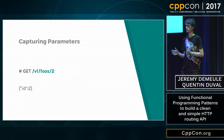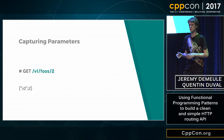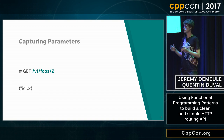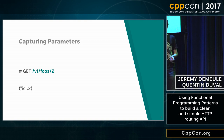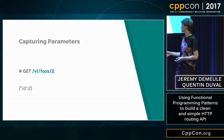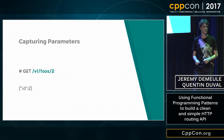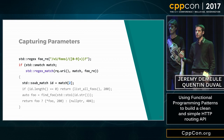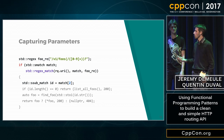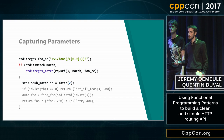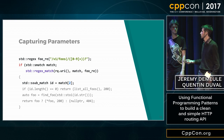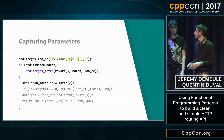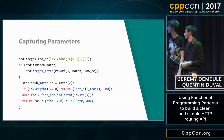Instead of sending static URIs — meaning a URI that doesn't contain a variable — we are going to send a URI which contains something that we must extract. For instance, we're going to send the GET request to the URI /v1/foos/2, where 2 stands for the identifier of the foo that we would like to retrieve. This time, we can't use exact match anymore. We have to express all the URIs we need to match. In C++, we have regex which permits expressing this kind of thing. Let's use regex, and from what we match, we know what to do — call the global code or the more specific one.